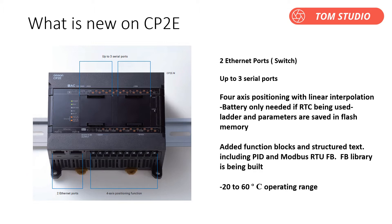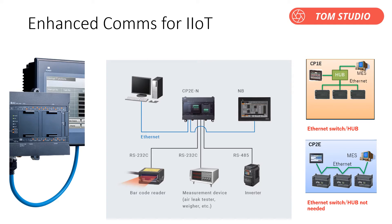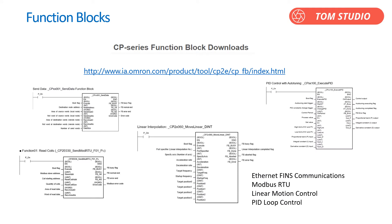The ambient temperature operating range is minus 20 to 60 degrees. CP2E comes with two built-in Ethernet ports — they are on the same network using the same IP address, so there is no need to use an Ethernet switch. Just take advantage of CP2E to easily connect to external HMIs or PLCs. Along with the CP2E new micro PLC release, Omron also released some newly designed function blocks, such as Ethernet FINS communications, Modbus RTU, linear motion control, and PID loop control.